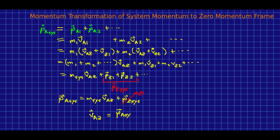And so, we've just found our velocity of the zero momentum frame. Just solving it out of here. And it is just the momentum of the system in our original frame A divided by the total inertia of the system.